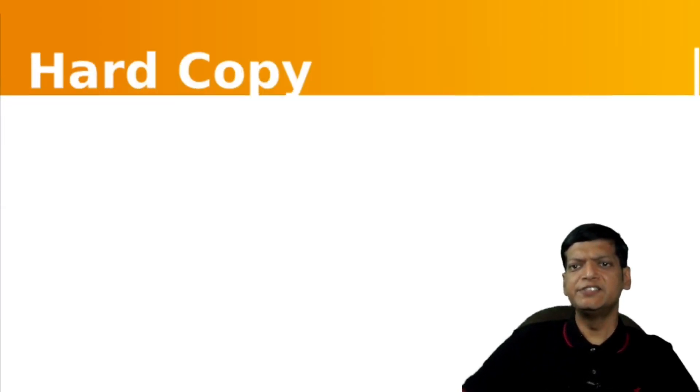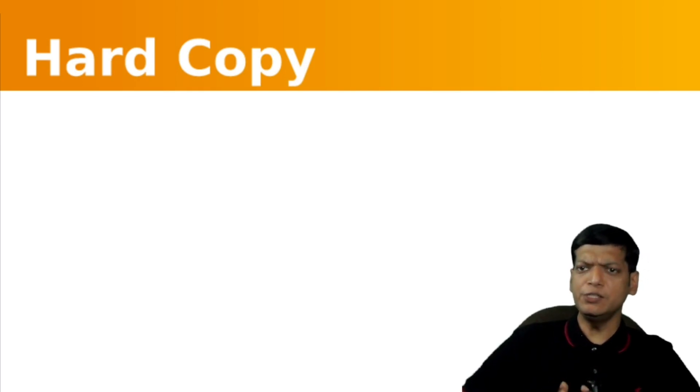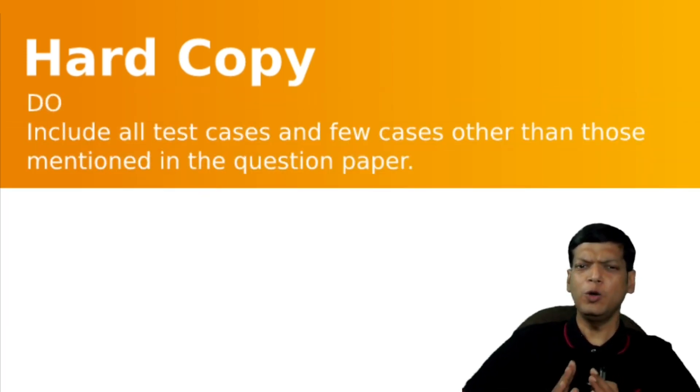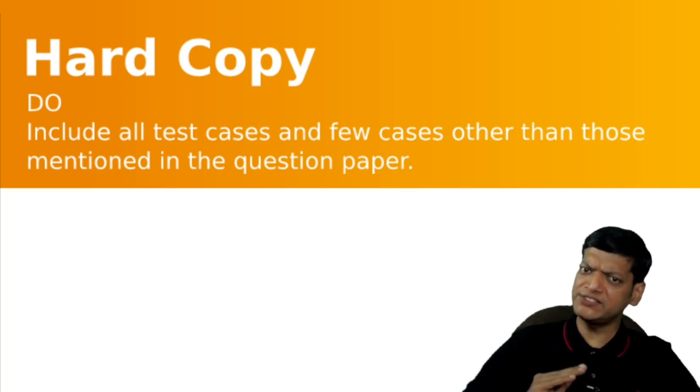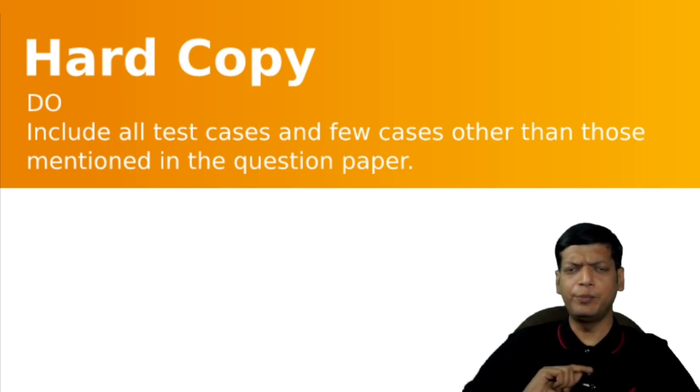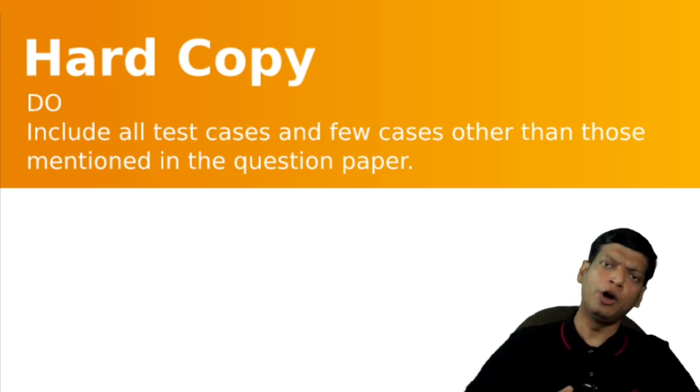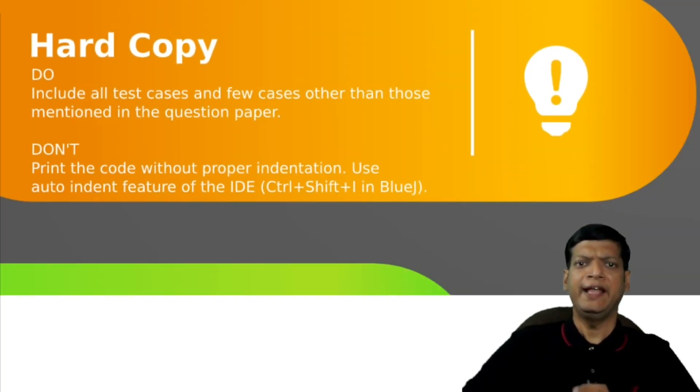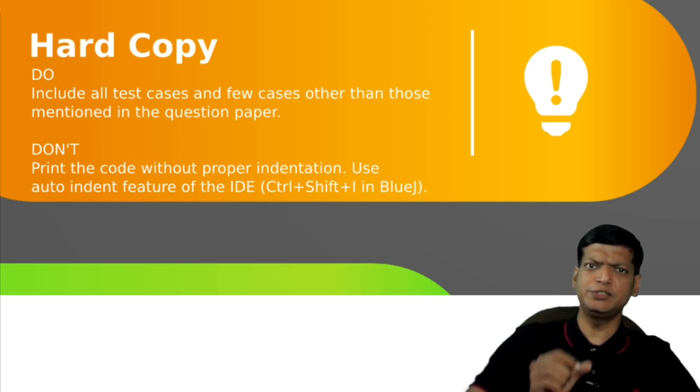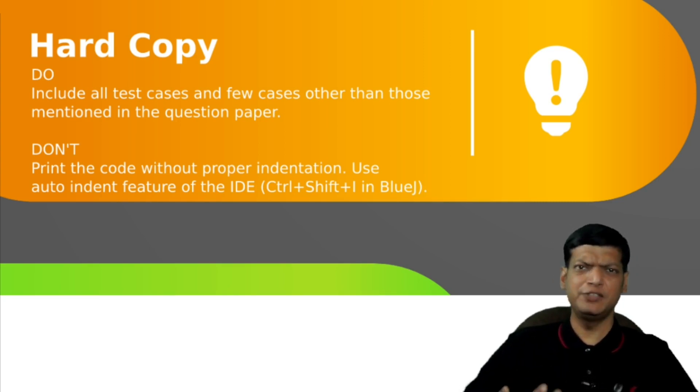The next thing is hard copy. Students are expected to include the listing of the program and the input and the output. The do's are always include all test cases and a few cases other than the ones mentioned in the paper. Ideally, these should be border cases or extreme values like very large values or small input values or in the cases in which you are supposed to get errors and all. Another thing is do not give unindented code. That is, the code should be properly tabbed. And the easiest way is you can use the auto indent feature, which is available in most of the IDEs. Like in Blue J, you can press Ctrl Shift I to automatically indent the code, which makes it look better.